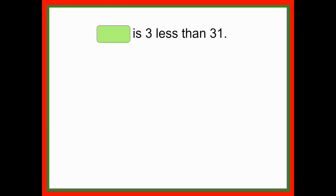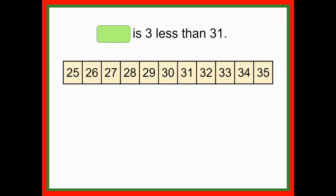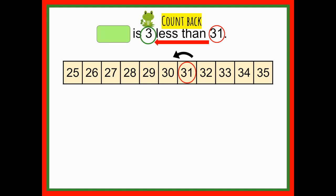Let's try a few 'less than.' We have our starting number circled in red, so we go to 31 on the number line. 'Less than' means we need to count back, moving to the left — the arrow is pointing left, showing which direction we're going to hop. Our hopping number is three, so starting on 31 we count back three hops: one, two, three — landing on the number 28. So 28 is three less than 31.